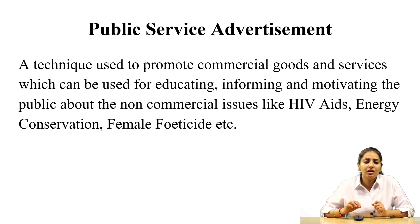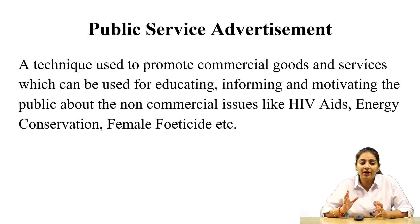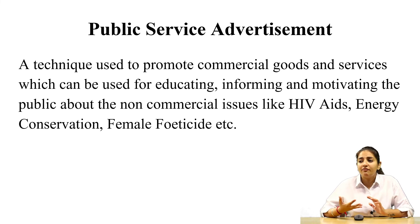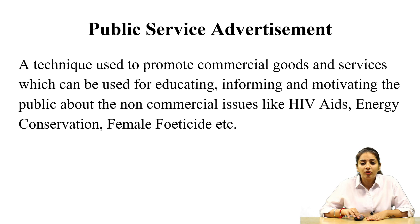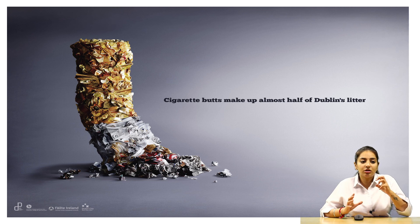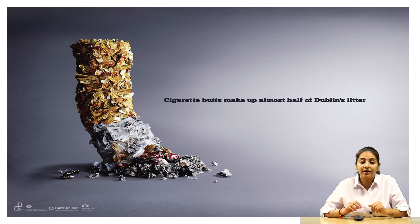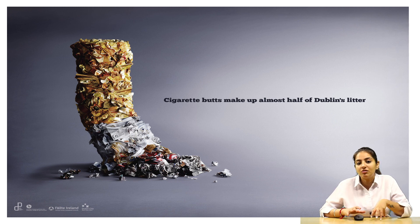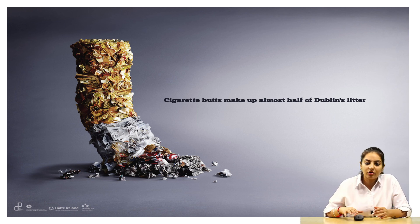Next is public service advertisement. These kinds of advertisements are generally started by organizations, NGOs, or the government so that people can get to know about different social issues like HIV/AIDS, female foeticide, energy conservation, and such things. They are trying to educate people and tell them about these particular issues to give a social message. For example, this advertisement about cigarettes shows that tobacco is injurious to health — if we are using cigarettes or cigarette buds, these are harmful for nature as well as for humans.